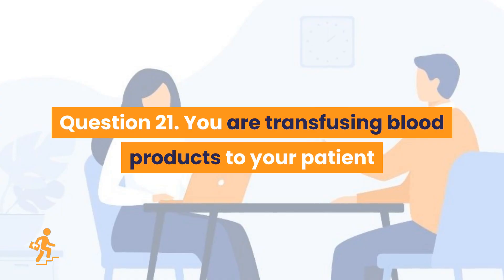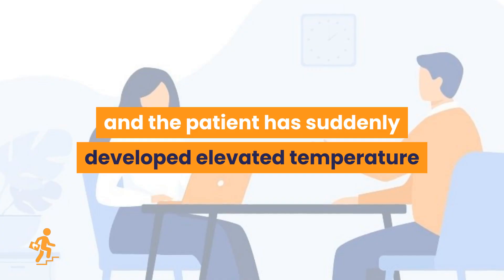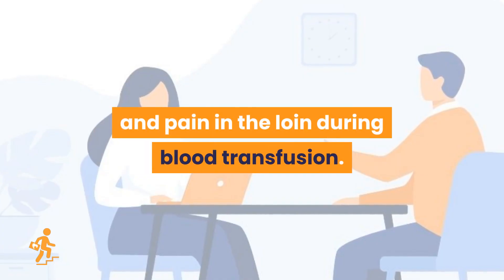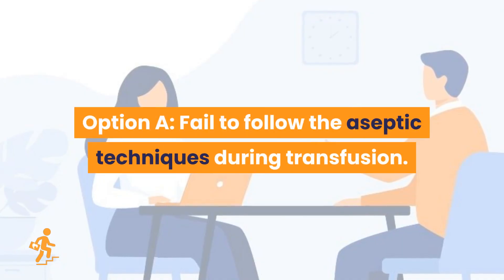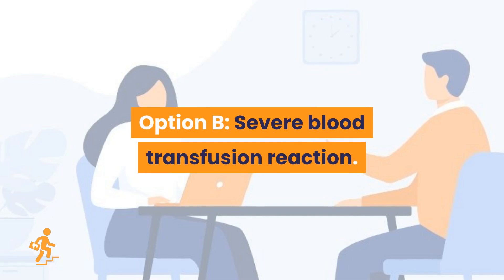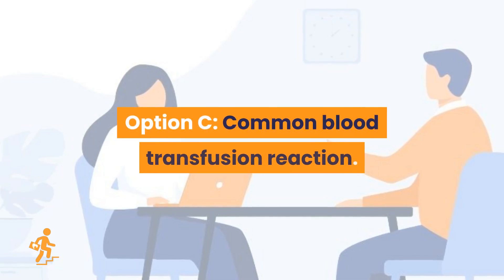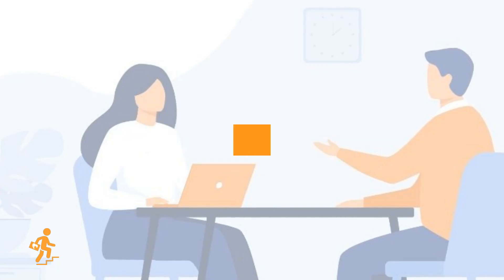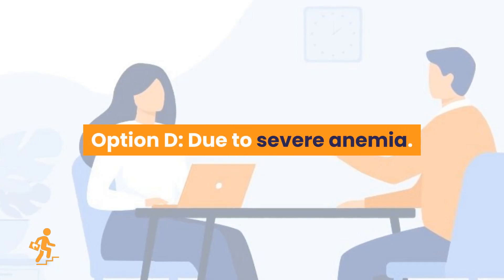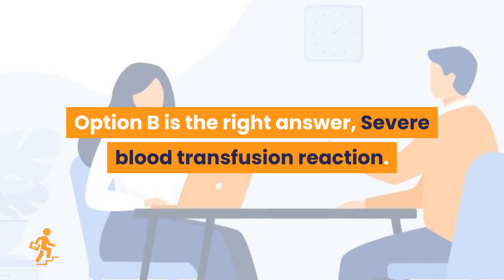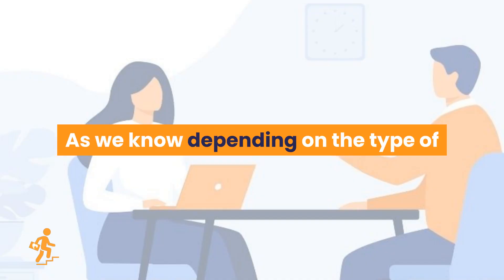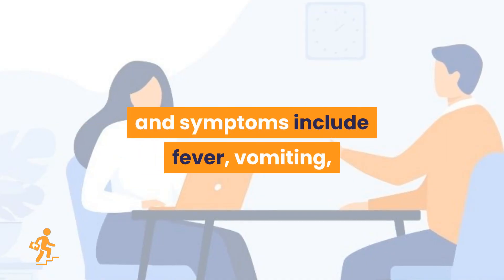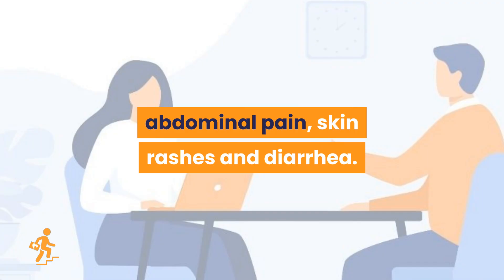Question 21. You are transfusing blood products to your patient, and the patient has suddenly developed elevated temperature and pain in the loin during blood transfusion. What does it indicate? Option A: Fail to follow the aseptic techniques during transfusion. Option B: Severe blood transfusion reaction. Option C: Common blood transfusion reaction. Option D: Due to severe anemia. Option B is the right answer: severe blood transfusion reaction. Depending on the type of transfusion reaction, symptoms include fever, vomiting, abdominal pain, skin rashes, and diarrhea.